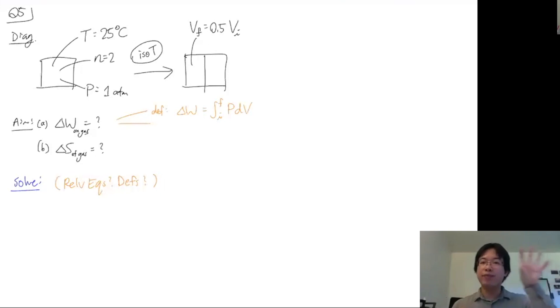Because why is it? Definition means you're just defining a new concept with old concepts. So technically the definition of work is initial to final of F dx, right? If you multiply by area and divide by area, you get this. So this is close enough of definition. In this context, it's much easier to work with PdV. I'm going to call that the definition.